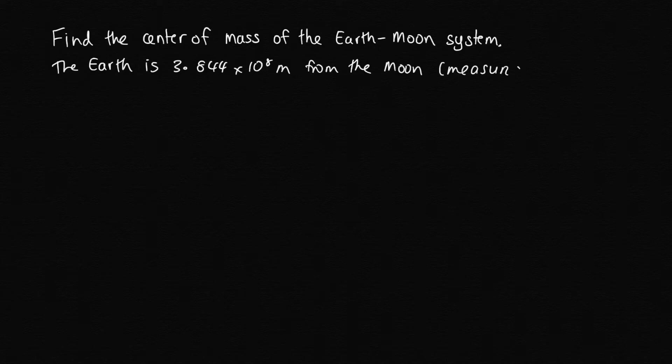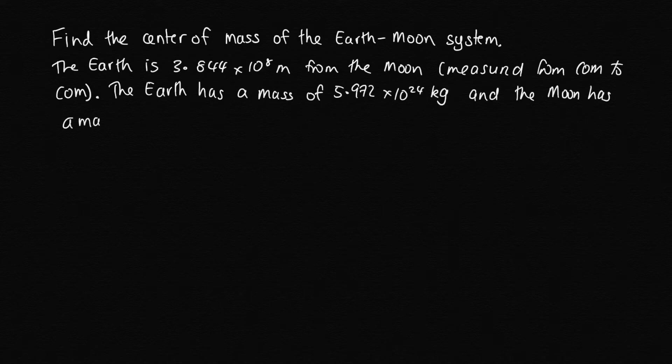Let's have a look now at how we can apply this to a very simple problem. We'll start with just two point masses. Find the center of mass of the Earth-Moon system. The Earth is 3.844 times 10^8 meters from the Moon, measured from center of mass to center of mass. Always assume that measurements are given from center of mass to center of mass. The Earth has a mass of 5.972 times 10^24 kilograms, and the Moon has a mass of 7.3848 times 10^22 kilograms.